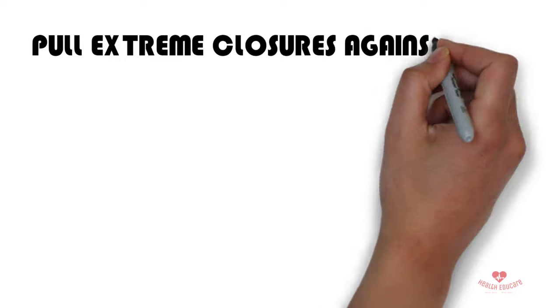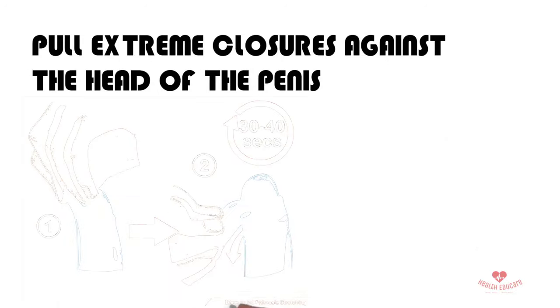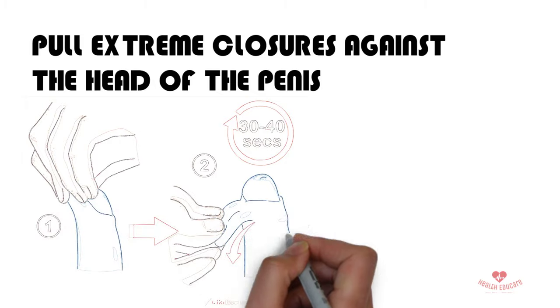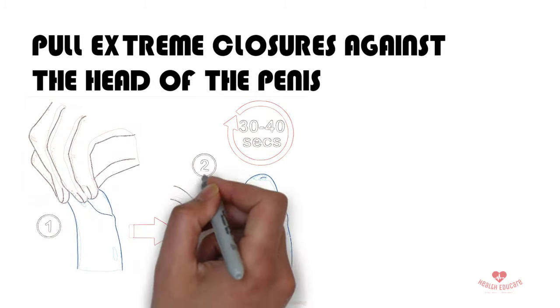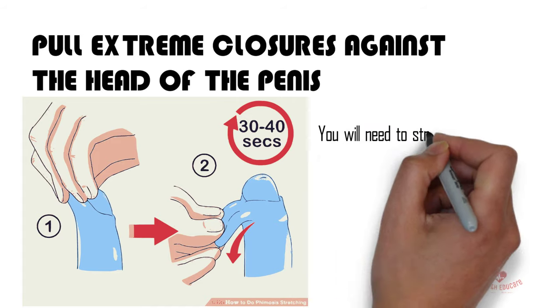Pull extreme closures against the head of the penis. If you have an extreme closure or pinhole phimosis, that means your foreskin ring is extremely tight and small. This is generally the case when you cannot insert fingers inside the foreskin. You will need to stretch the hole wider.